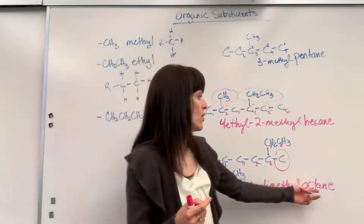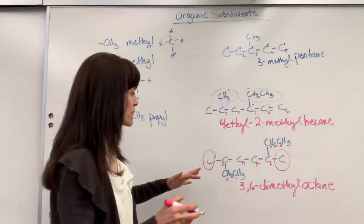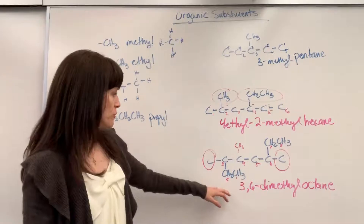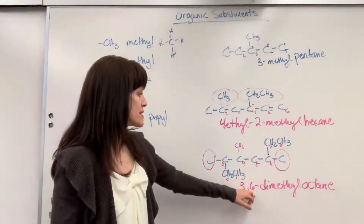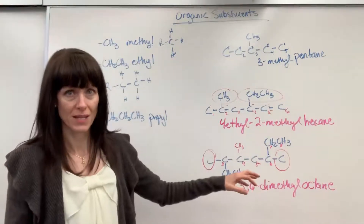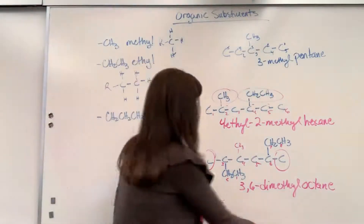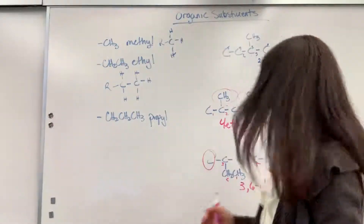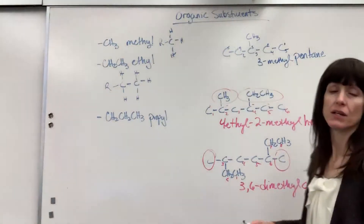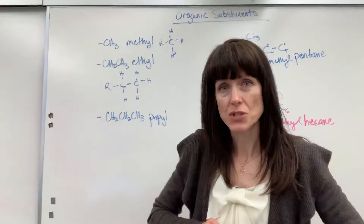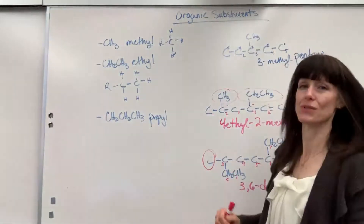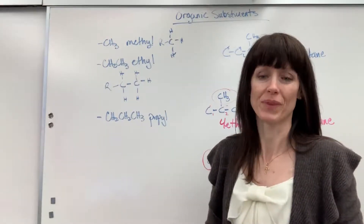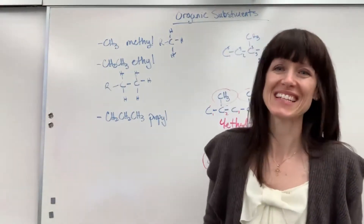For example, if there had been another methyl group on the four, it would have become 3,4,6-trimethyloctane. So to summarize: number one, find the longest carbon chain — that is your backbone. Number two, identify the substituents. Number three, number them so substituents get the smallest numbers. Then write substituent names in alphabetical order. Good work!